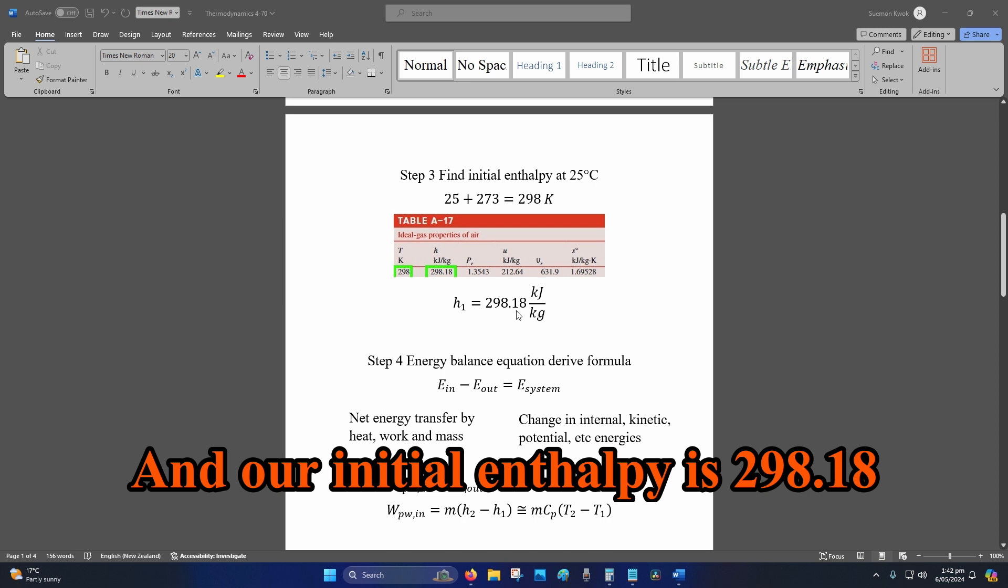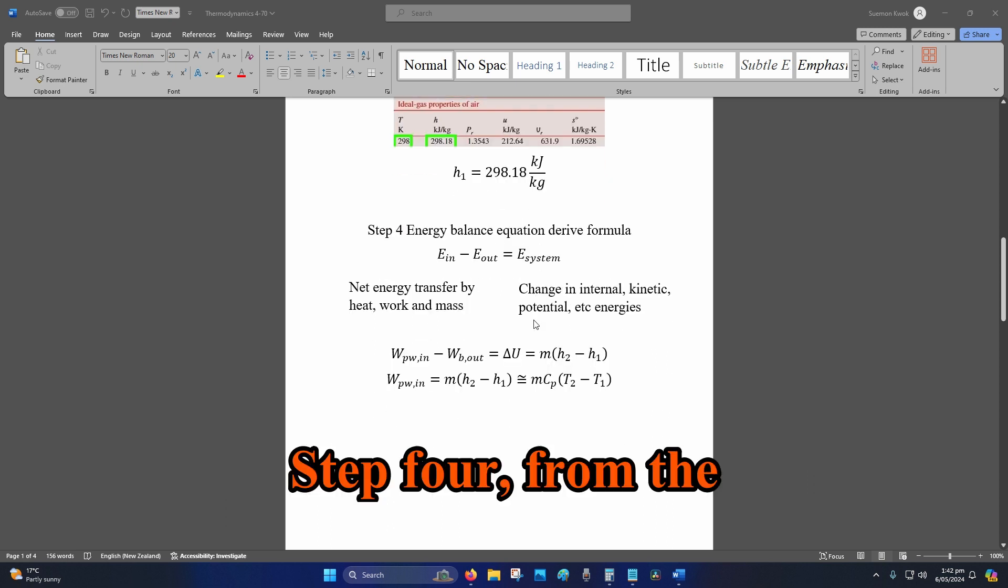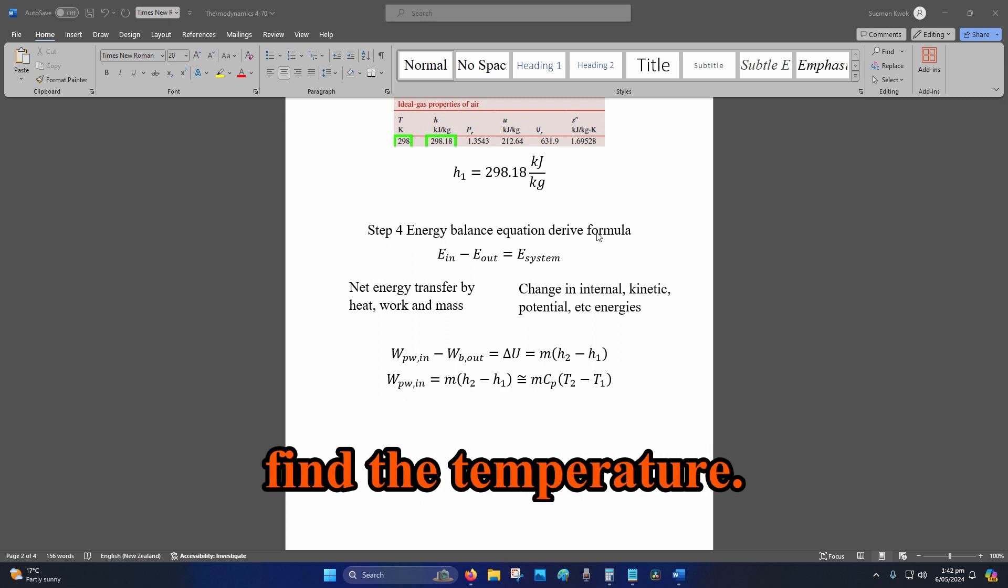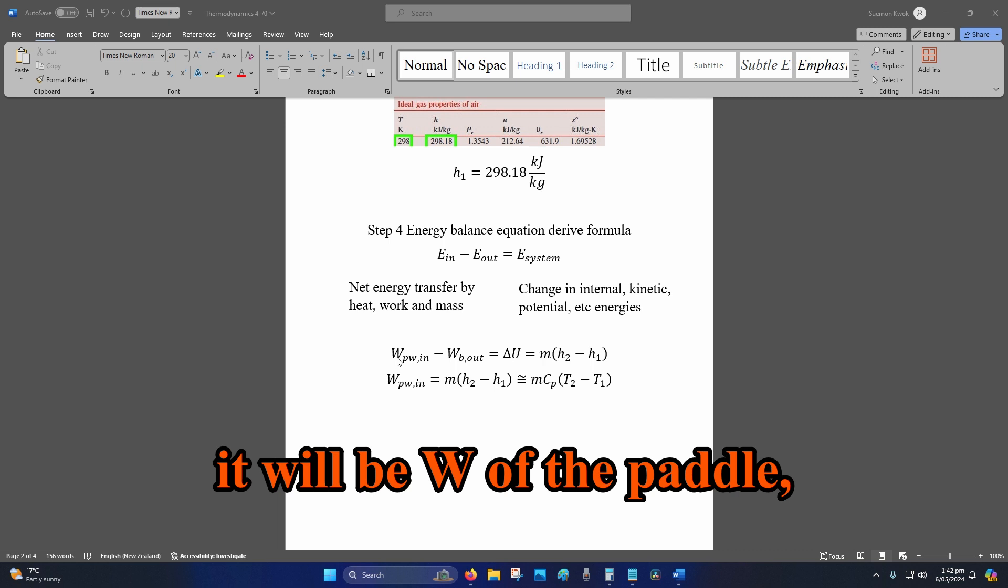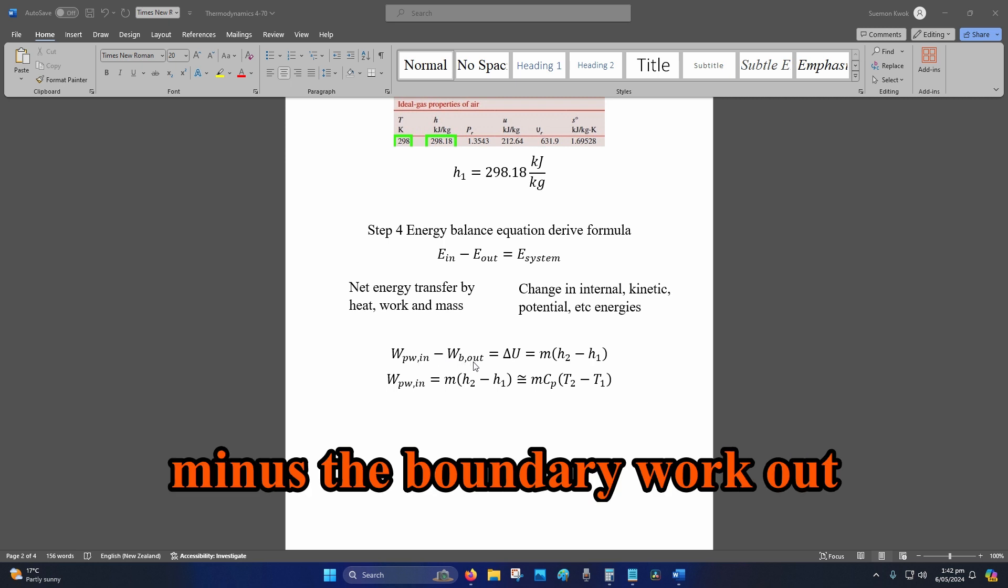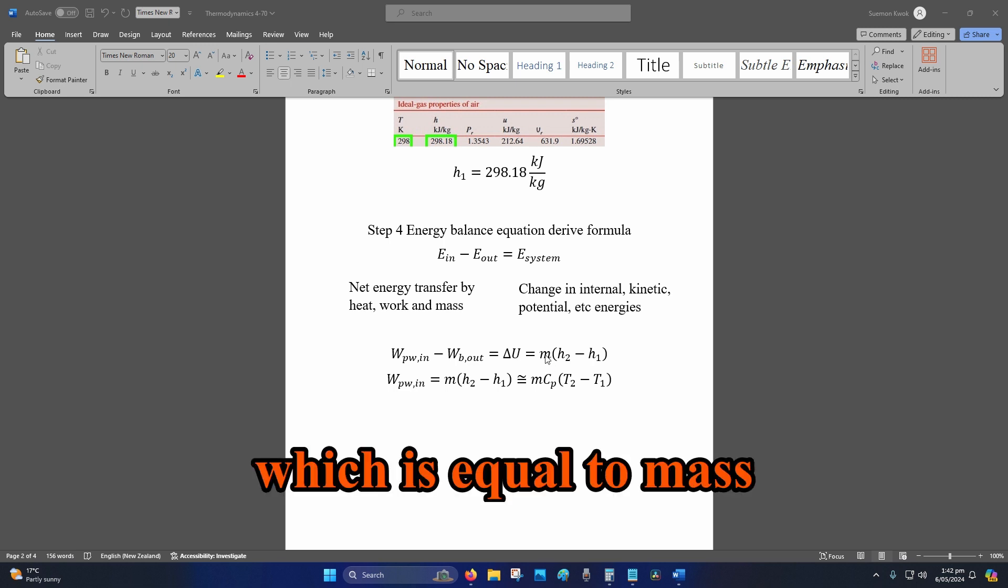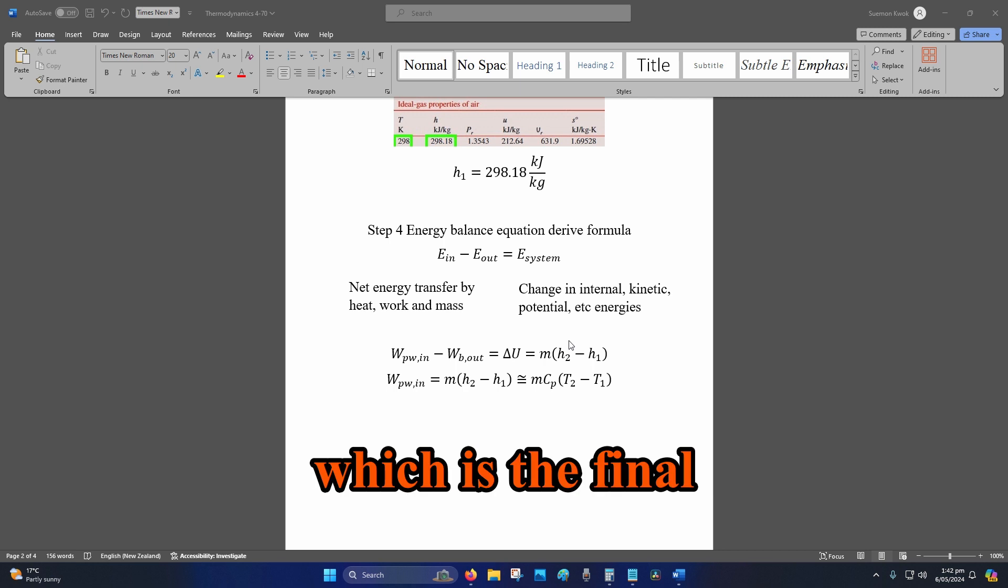Step four: from the energy balance equation, derive the formula to find the temperature. So with respect to work, it will be W of the paddle, so work of the paddle in, minus the boundary work out, is equal to delta U, which is the change in internal energy, which is equal to mass multiplied by delta h, which is the final enthalpy minus the initial.